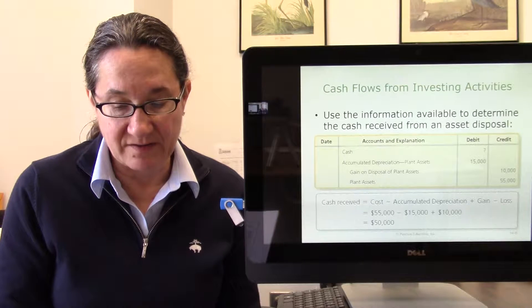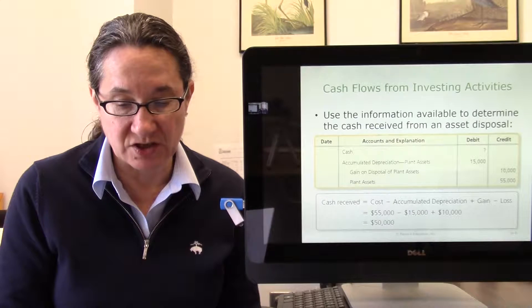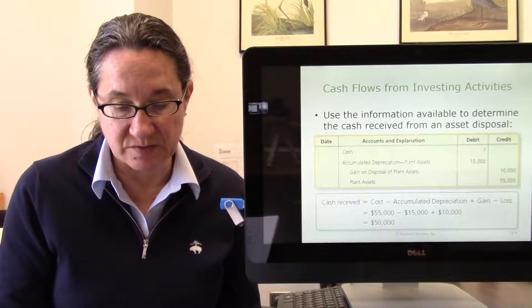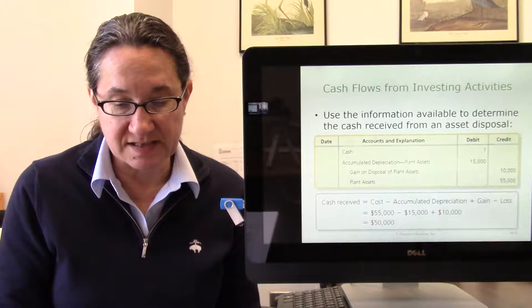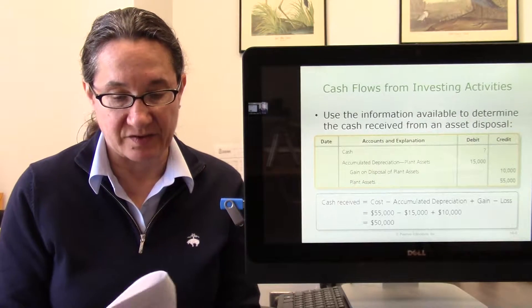We compute the cash receipt from the disposal as follows: cash received equals cost minus accumulated depreciation plus gain minus loss. Using the figures from this example, the cash received was $50,000. $55,000 was the cost minus accumulated depreciation which was $15,000, plus the gain which was $10,000.